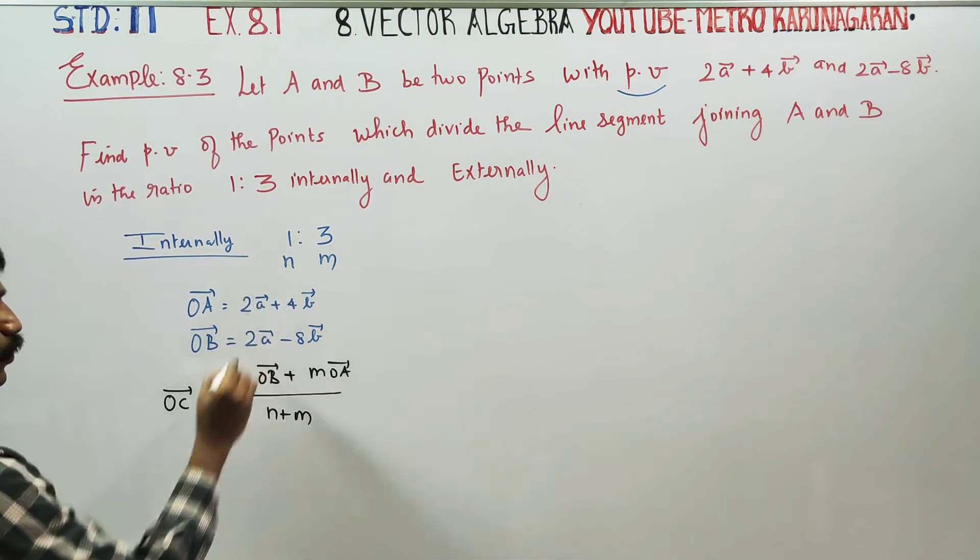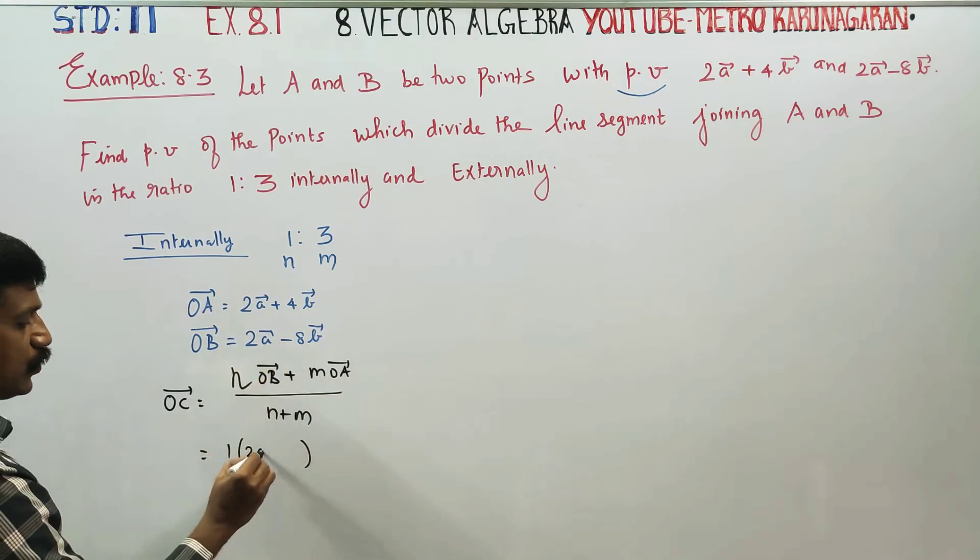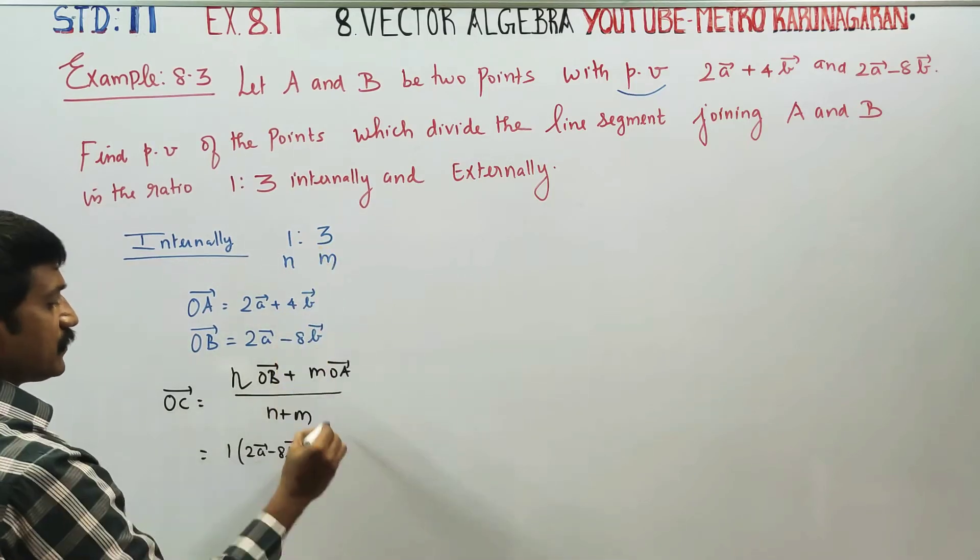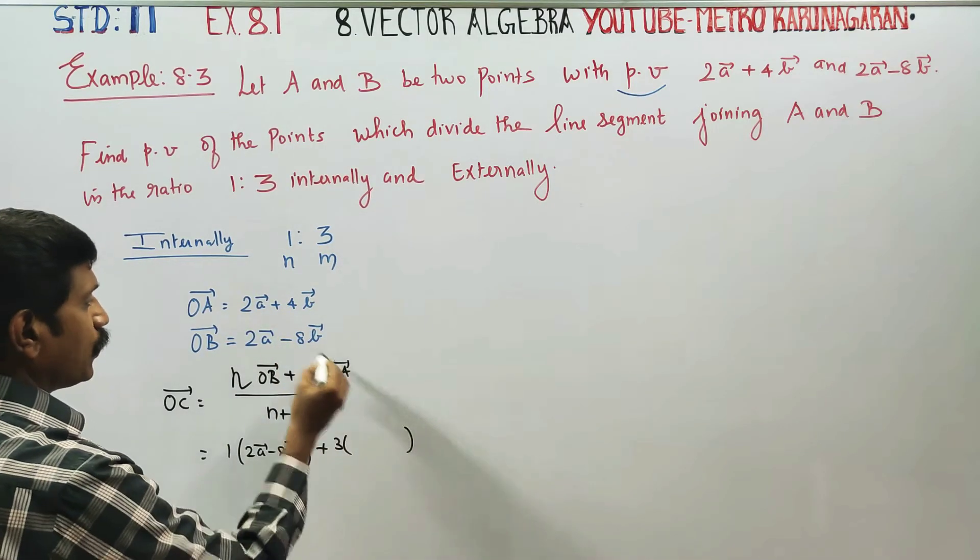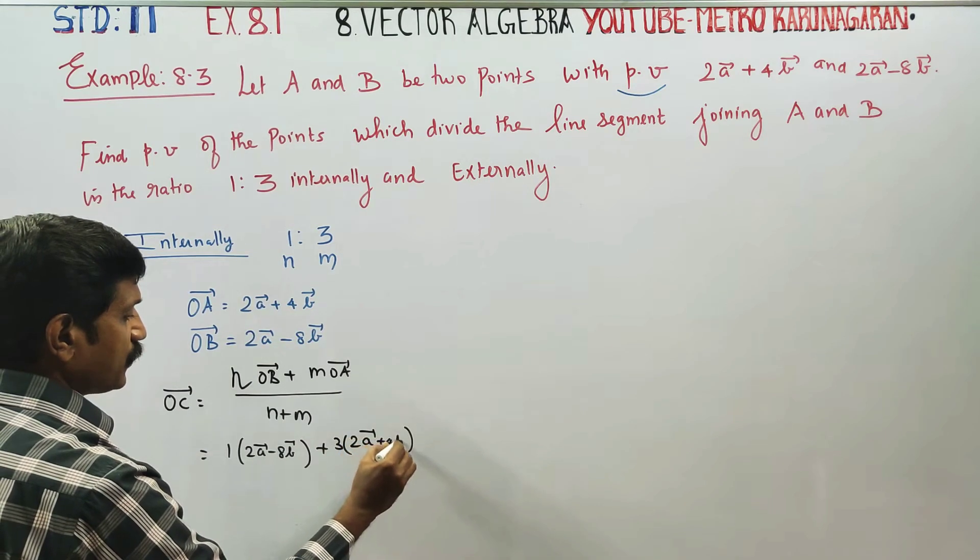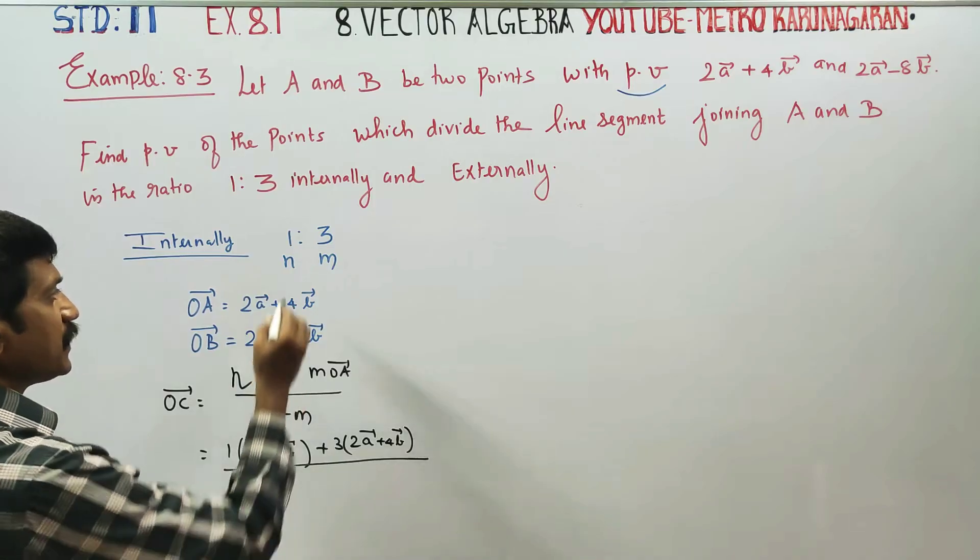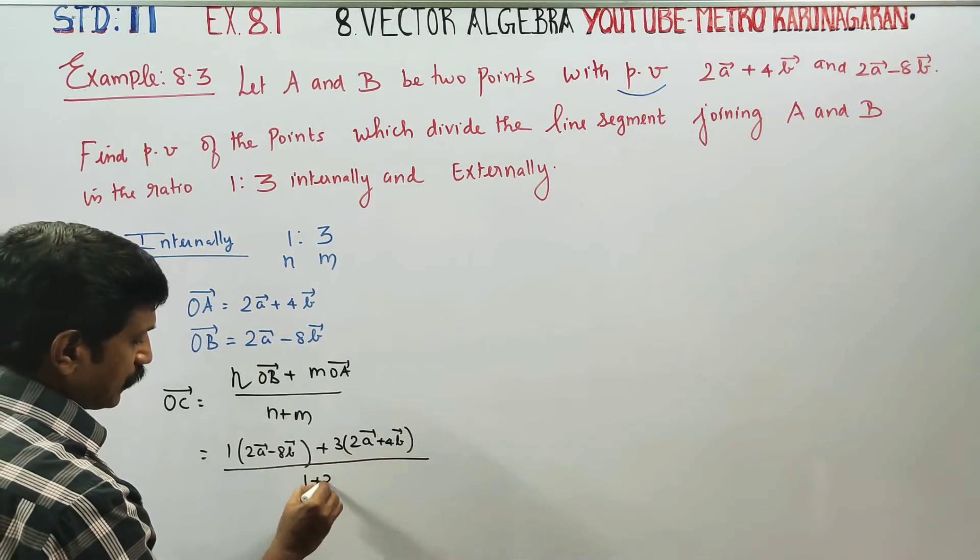n into 1 into OB vector, 2a minus 8b, plus m, m is equal to 3, OA vector, 2a vector plus 4b vector, by n plus m. n plus m is equal to 1 plus 3.